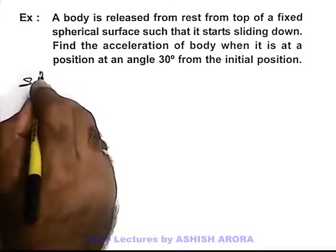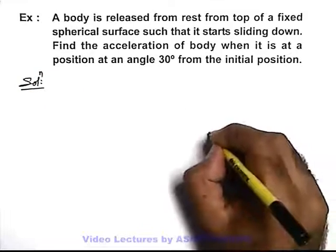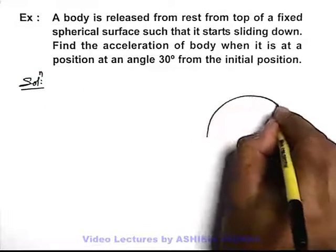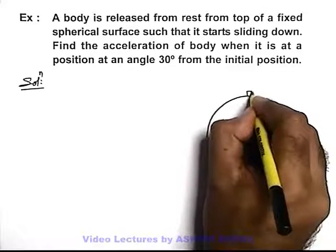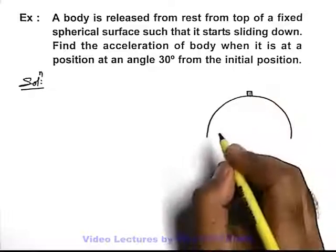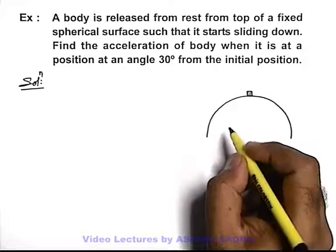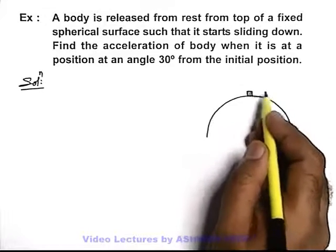Let us first draw the physical situation. We are given that there is a spherical surface. From the top of the spherical surface, a body starts sliding down.